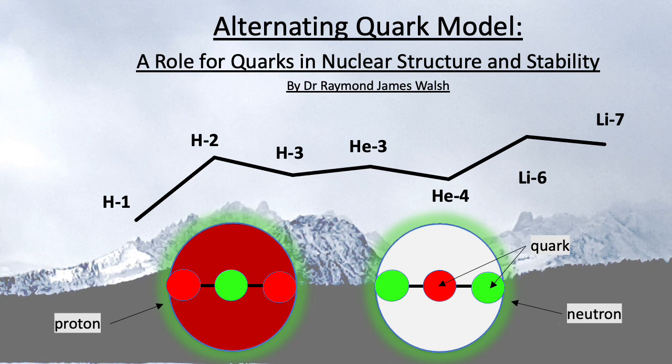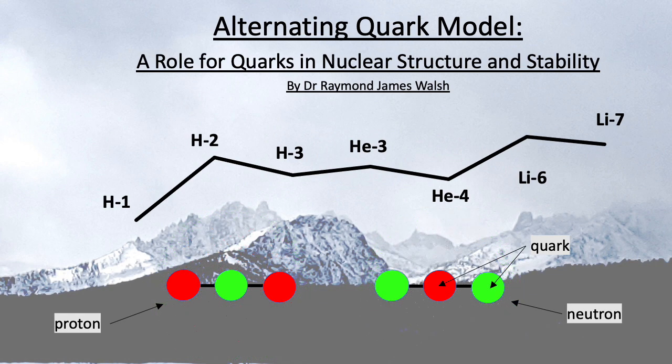Protons and neutrons have three quarks each. We will present simple geometric structures for light nuclei that are based on average quark positions, and show how the stability of these light nuclei depends on an alternating quark arrangement. The alternating quark model offers a new framework to analyze both nuclear structure and stability, and perhaps provide a path forward to clean and abundant fusion power.